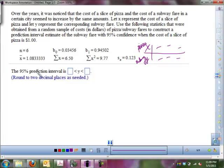They got B naught and B1 and X bar, the sum of X, sum of X squareds, and the standard error of estimate, S sub E. So for us to find this prediction interval, what we need to do is figure out what our Y hat is and what our margin of error is.